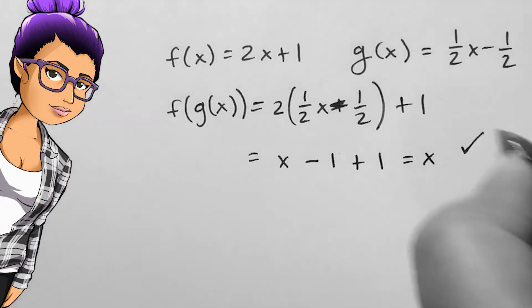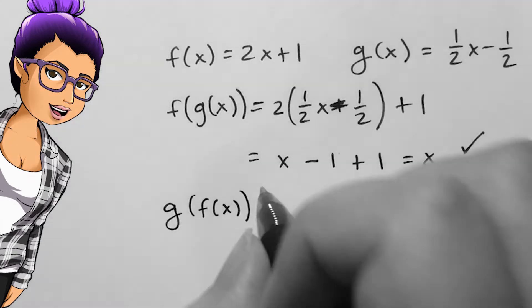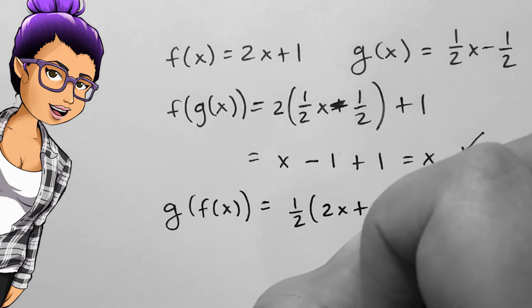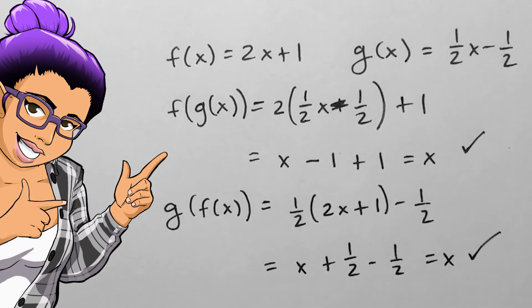When I find f of g of x and simplify, I get x. This is a good sign. I should continue with the other composition. When I find g of f of x and simplify, I also get x. f of x and g of x are inverses.